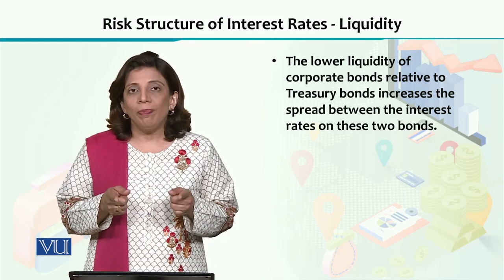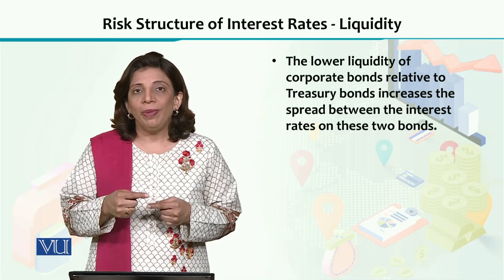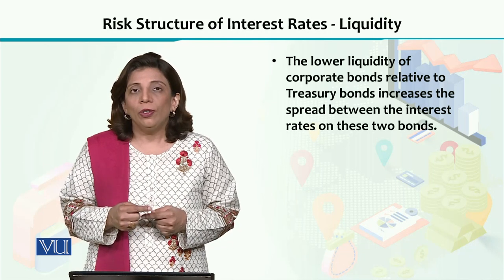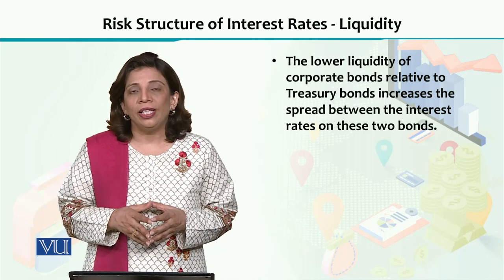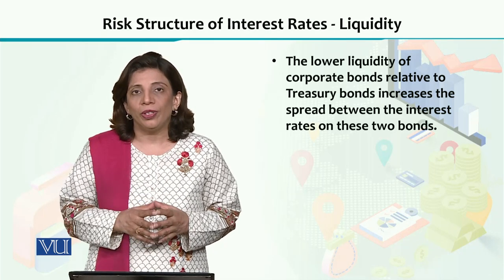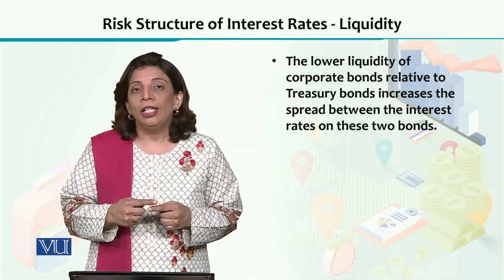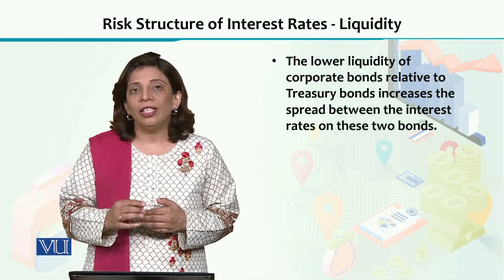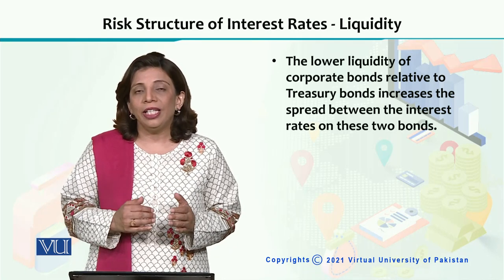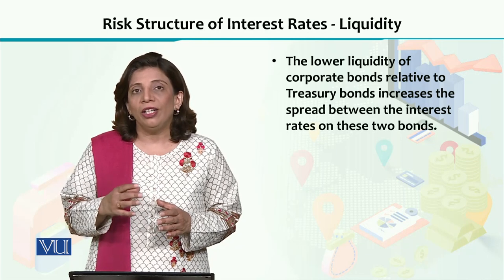So when we evaluate the liquidity perspective of corporate bonds and treasury bonds, we get a difference in their interest rates. In financial economics terms, we call this difference the 'spread.' Spread means the difference in interest rates between the two types of bonds. So if there is a large difference in terms of liquidity between the two financial instruments, the spread will be higher. And if the difference is low, then the spread will also be low. This is an important insight: lower liquidity leads to higher interest rates.